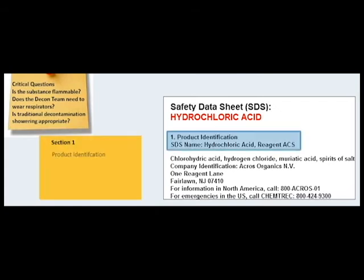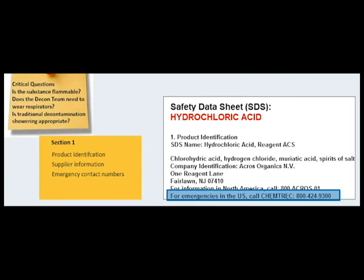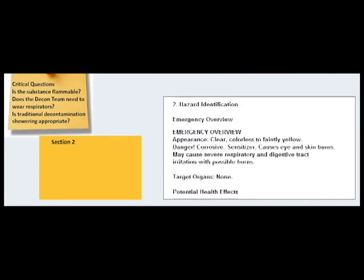Section 1, Identification: This section identifies the chemical as well as its recommended uses and provides essential contact information of the supplier. A quick review provides Jamie with an emergency contact number to learn more about the agent, which is also called muriatic acid. Section 2, Hazard Identification: This section identifies the hazards of the chemical and the appropriate warning information. By reviewing this section, Jamie quickly learns that hydrochloric acid is dangerous, it is a corrosive, and can cause serious eye and skin irritation and damage.